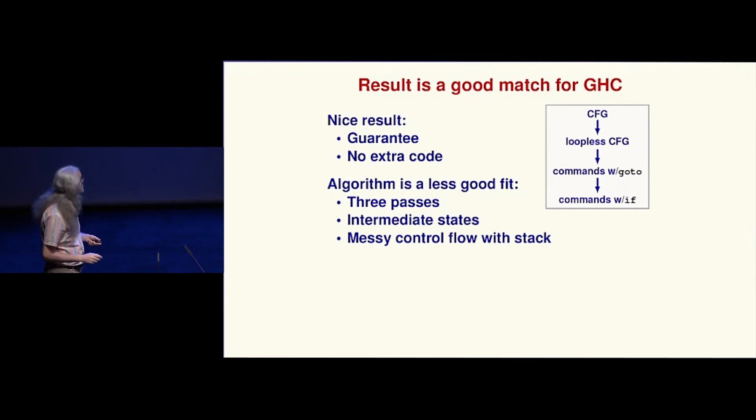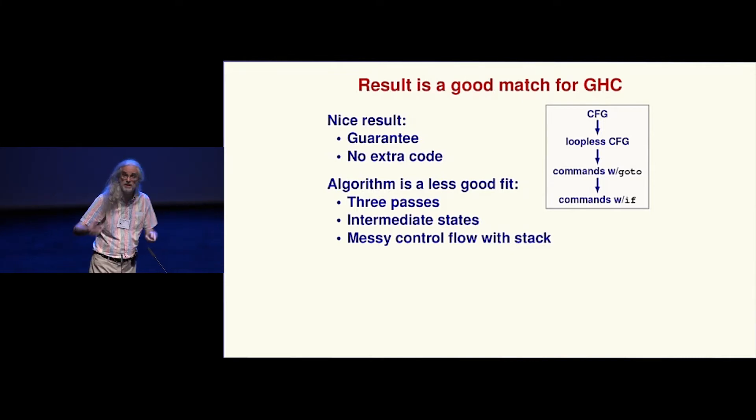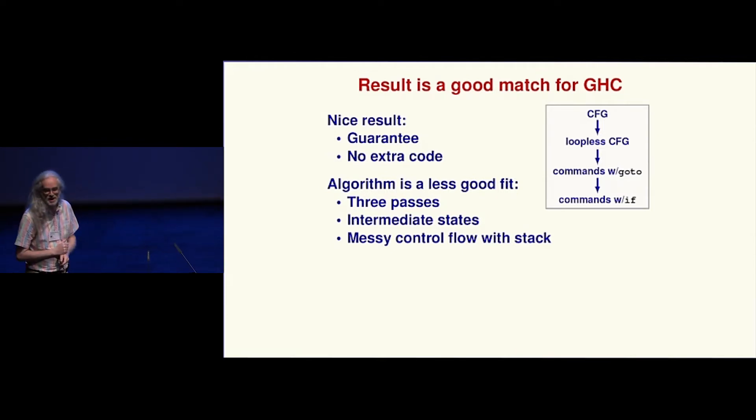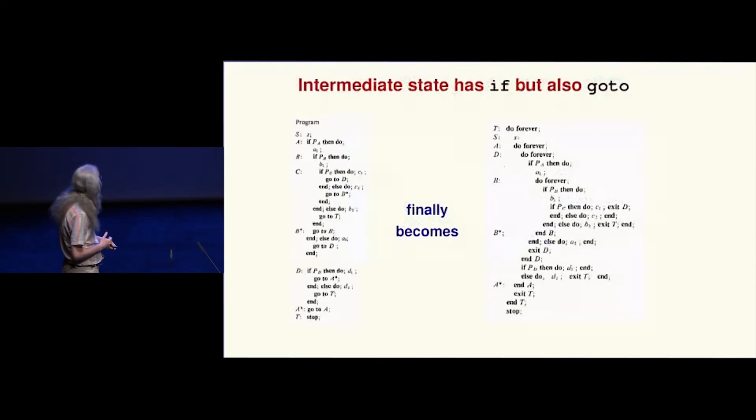The pros: absolute guarantee the algorithm is going to work, it's going to terminate, and no code is duplicated. The translation runs exactly the same set of tests and actions as the original, and there's no static duplication either. Very nice. But it's not a lovely algorithm—it's got three passes, intermediate states, the control flow is messy, it works by emitting code as a side effect. I wouldn't want to propose to Simon that I put such a thing into GHC.